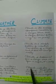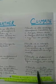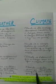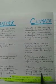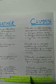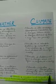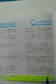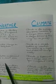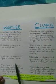Climate includes average temperature, rainfall, etc., which prevails in a region. These are the differences between weather and climate.